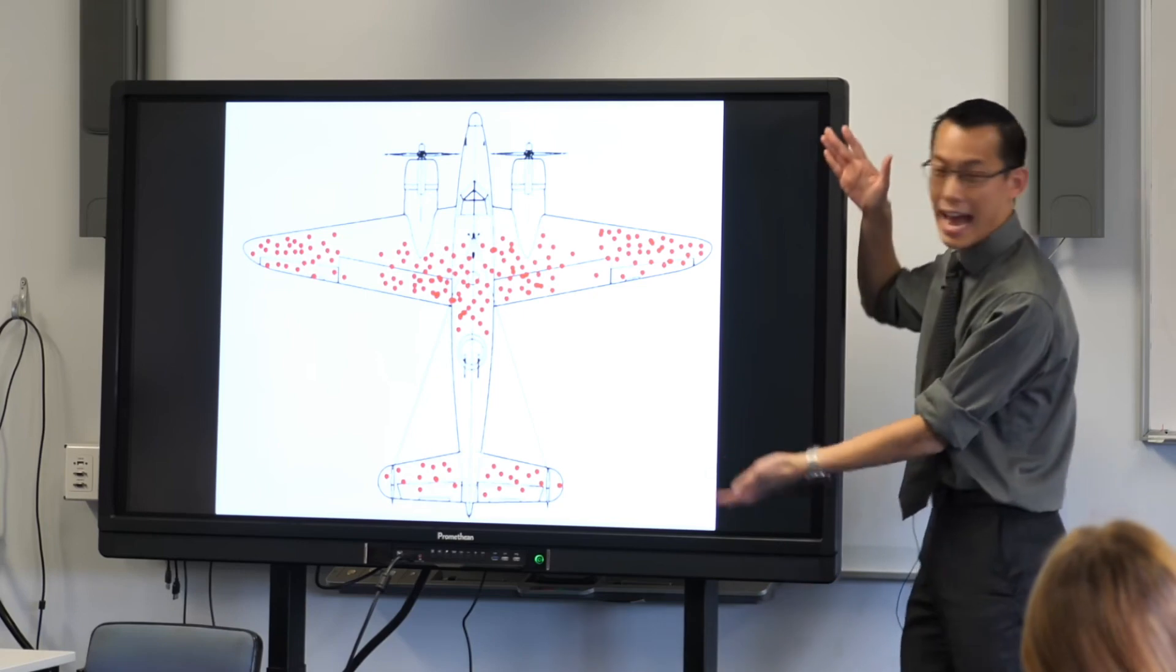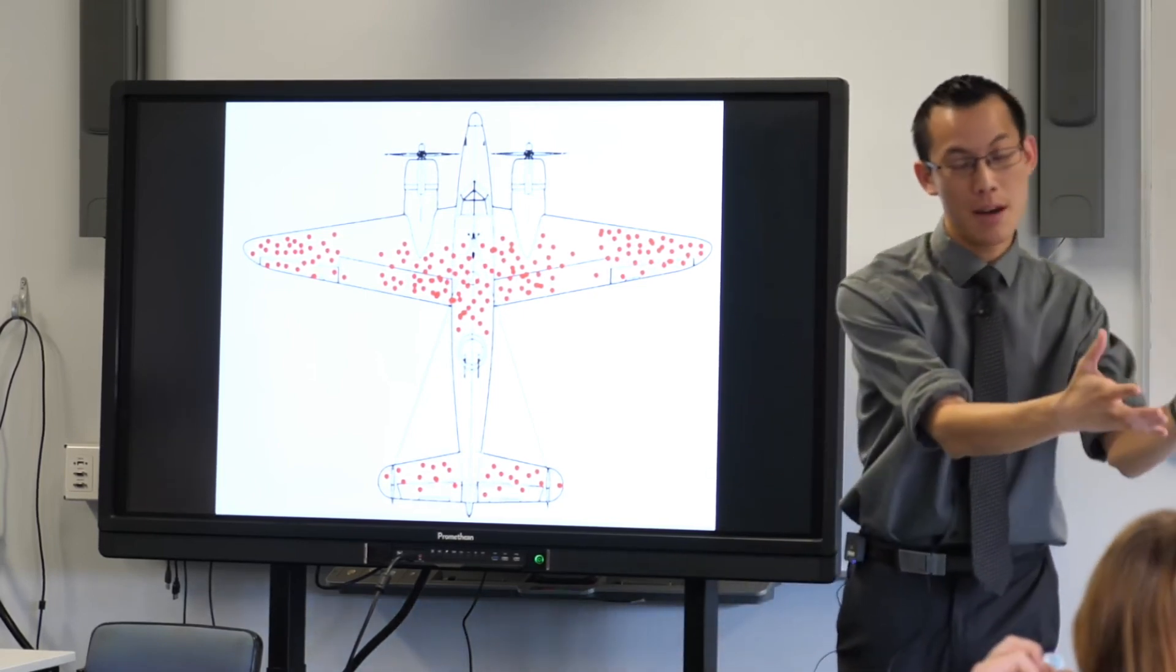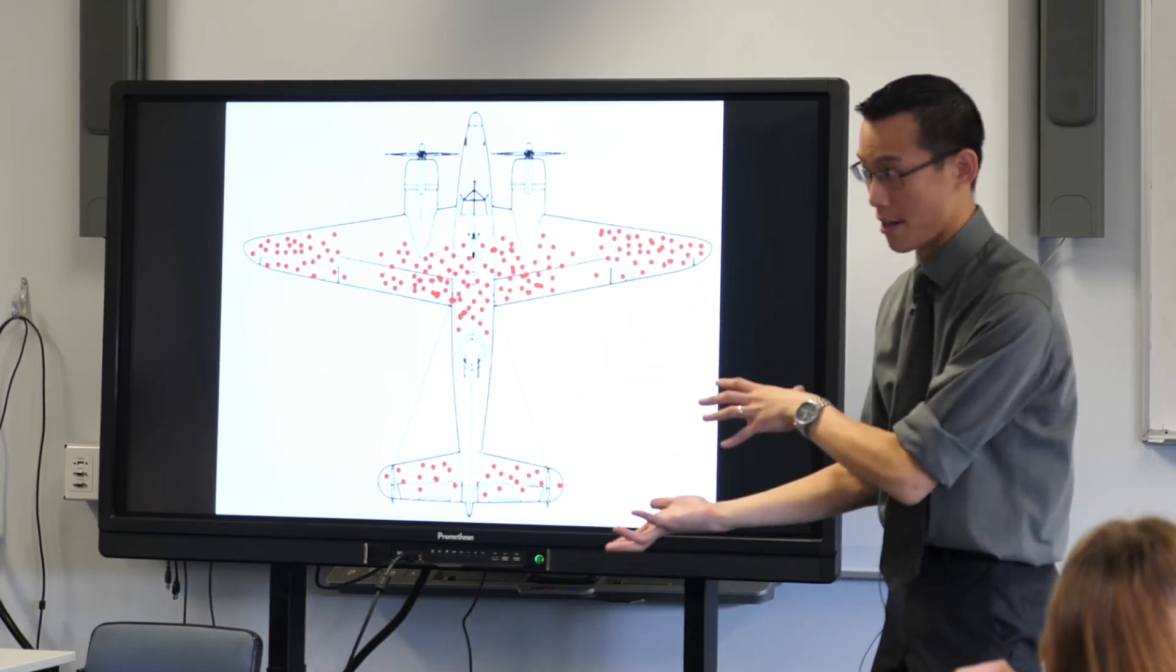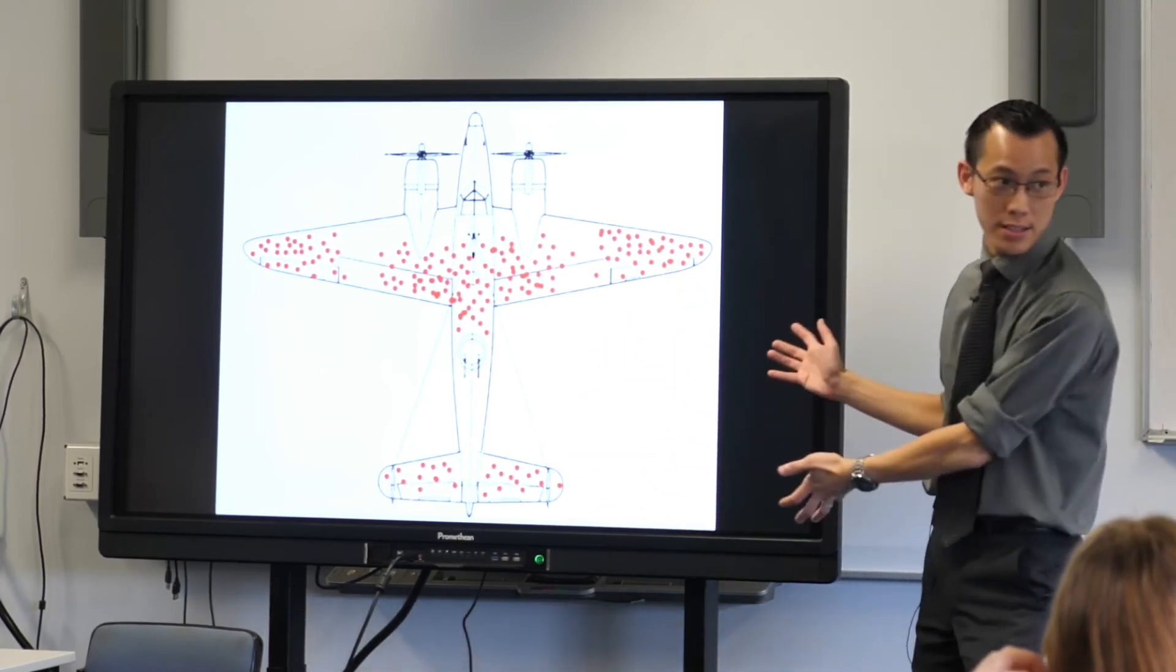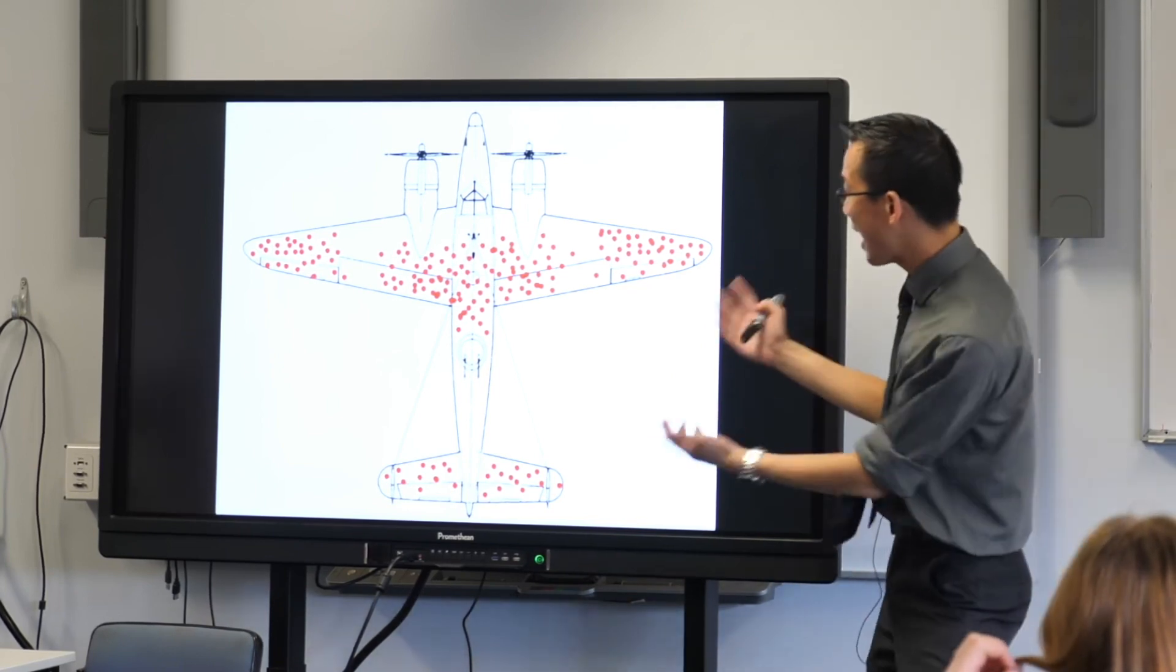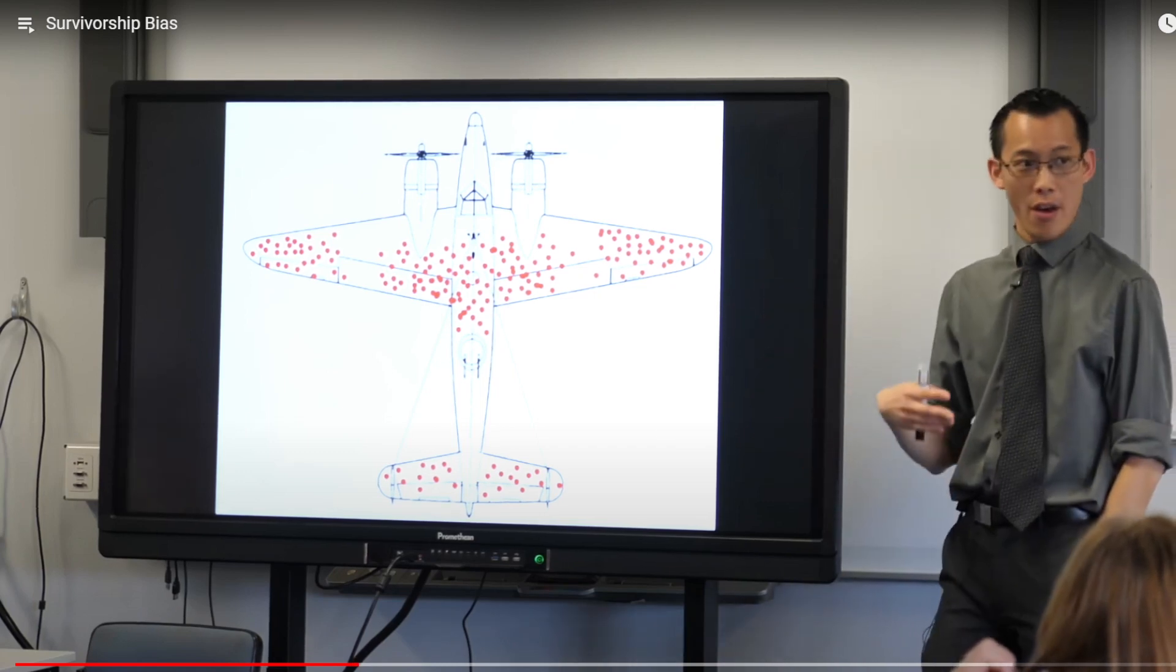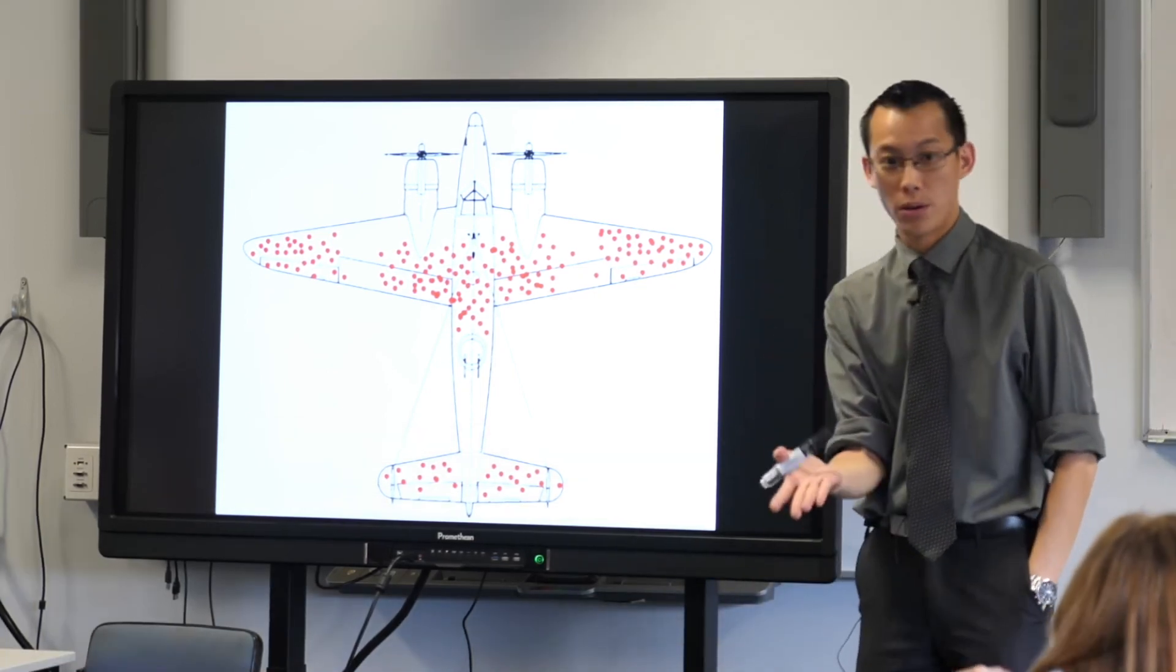So they gathered some data to try and help them work out, can I put more armour on some areas and less armour on others? Now, when you have a look at this, I want you to think about what conclusion the aircraft designers would have made when they had a look at all their aircraft and where they got shot. Where do you think they should put the armour?